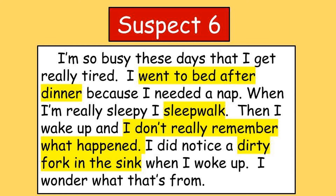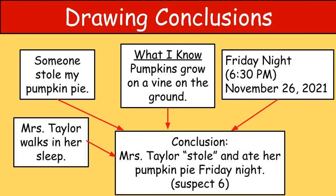Oh no, I'm so sorry I made you do all this work. But thanks for solving my mystery! Here's an updated version of our graphic organizer. I added one more piece of evidence: Mrs. Taylor walks in her sleep. All four pieces of evidence helped me draw the conclusion that Mrs. Taylor, suspect number six, stole and ate her pumpkin pie Friday night. But let's not give her a hard time — she didn't know she was doing it after all. Thanks so much for helping me solve the mystery of the missing pumpkin pie.